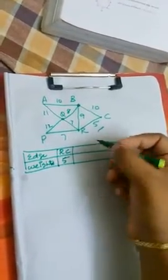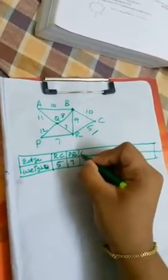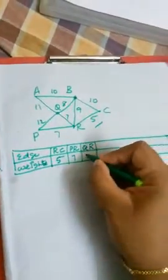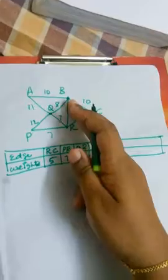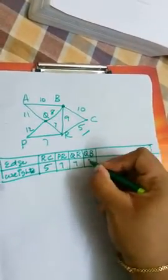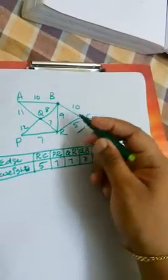Here two edges have the same weight of 7: PR and QR. We can take any of them either at first then the latter. So here we are taking first as PR, next we will write QR with weight 7.